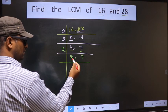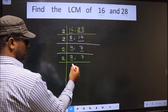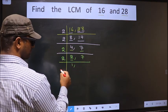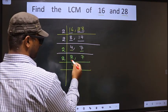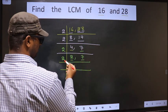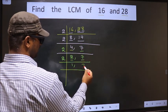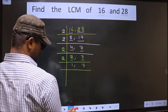Now here we have 2. 2 is a prime number, so 2 times 1 is 2. The other number 7 is not divisible by 2, so we write down 7 as it is.